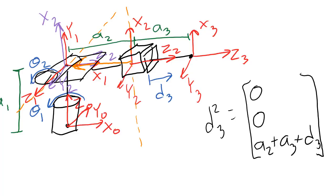Now that we've found all of the displacement vectors — d0,1, d1,2, and d2,3 — we're done with this example.